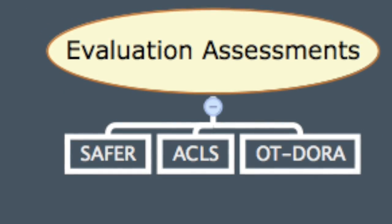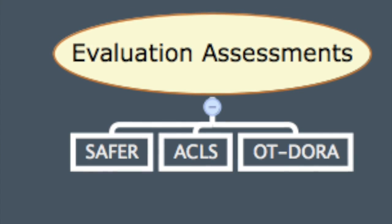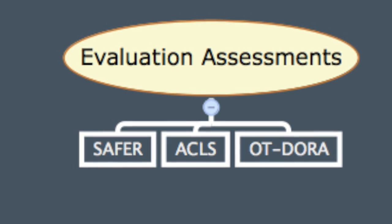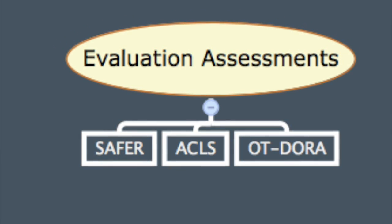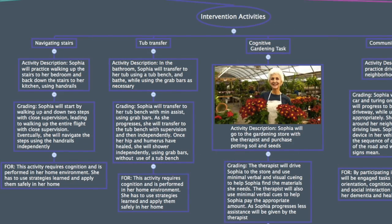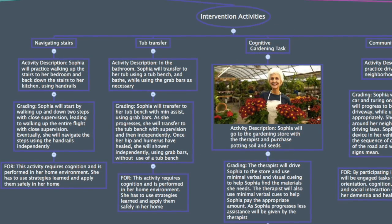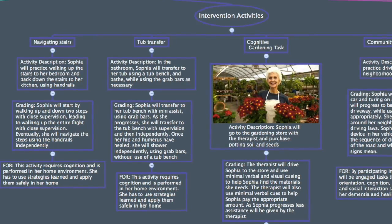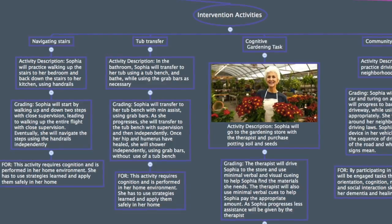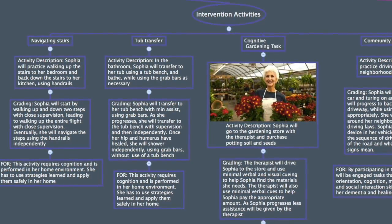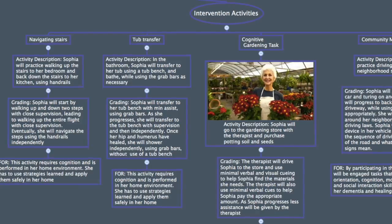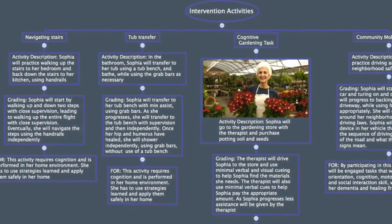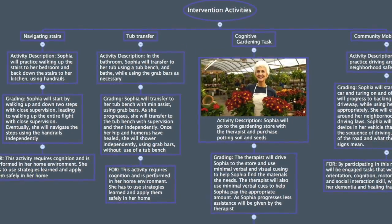Assessments used with Sophia in this stage of her recovery include the SAFE to assess her fall risk, the ACLS for cognition, and the OT-DORA to assess her driving capabilities. Sophia enjoys activities such as going to church and gardening, both of which require global mental functions to carry out the task. By participating in these meaningful activities, Sophia will be engaged in tasks that work on her memory, orientation, cognition, motor skills, process skills, and social interaction skills, which are all affected by her dementia and healing fractures.